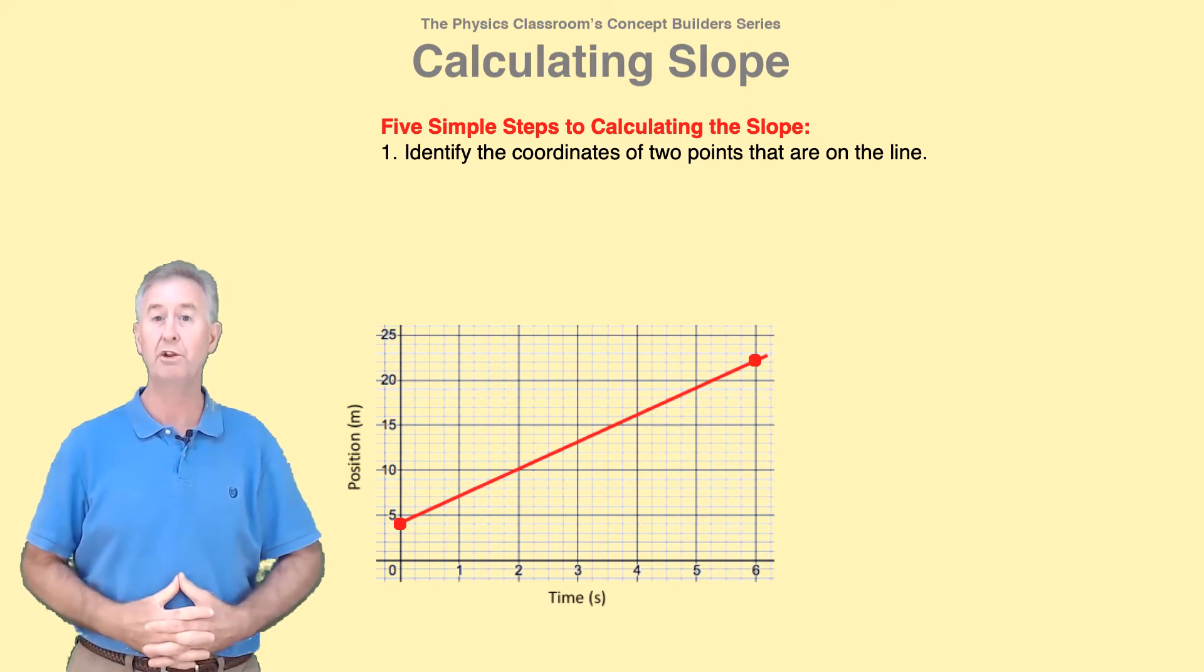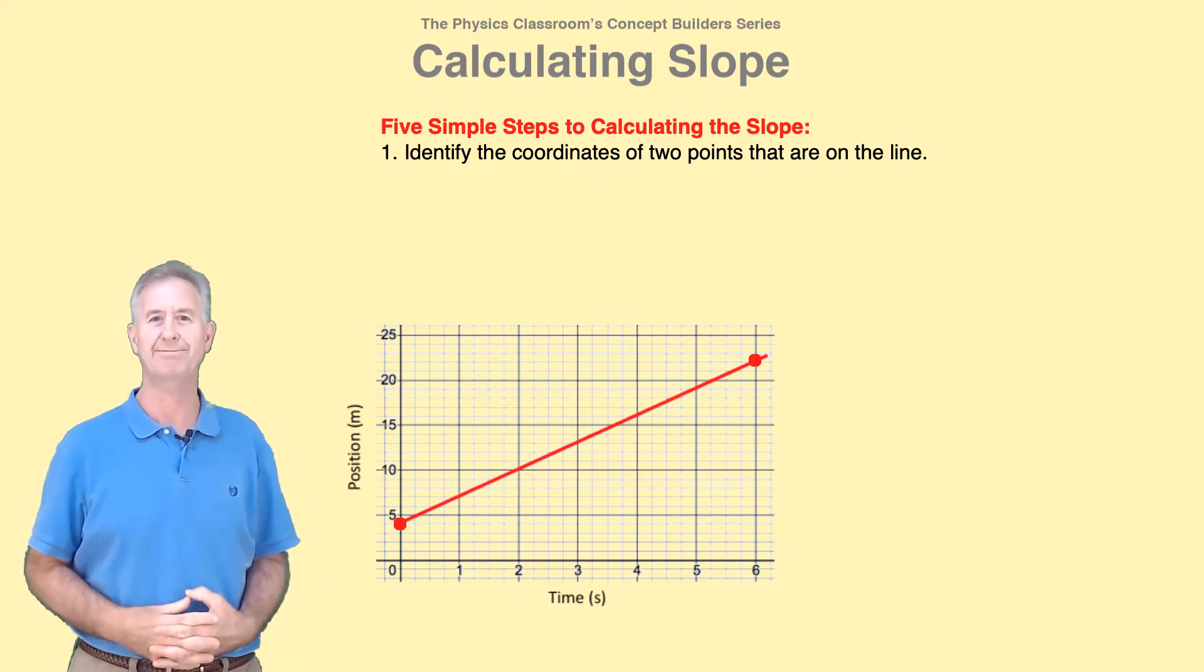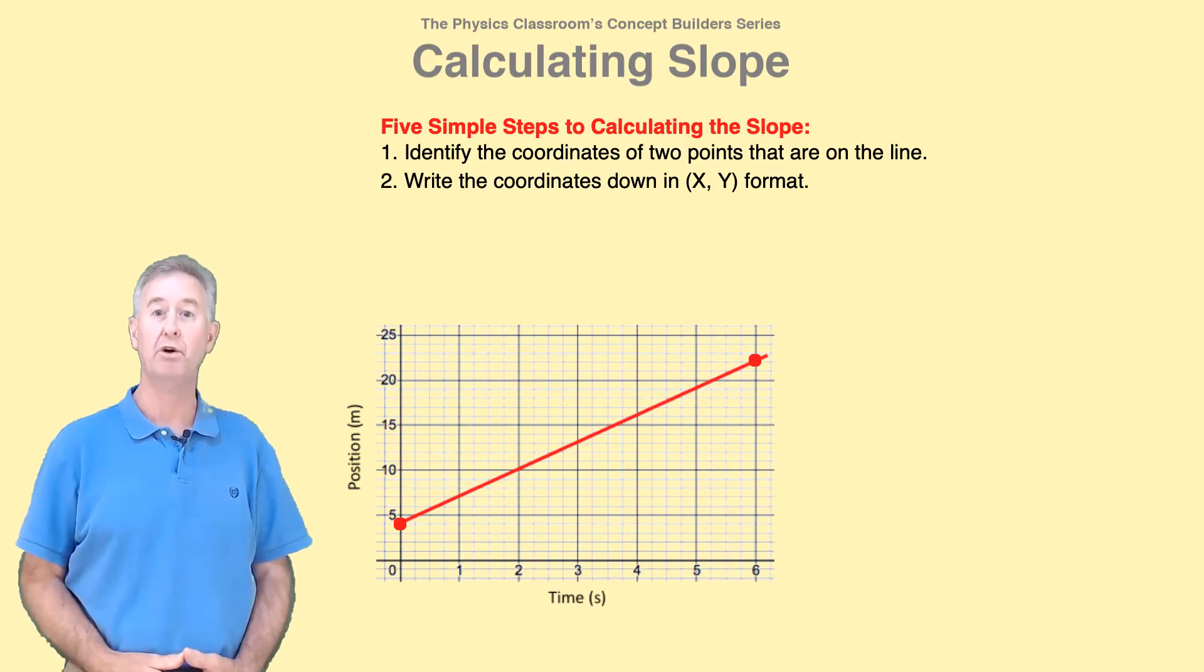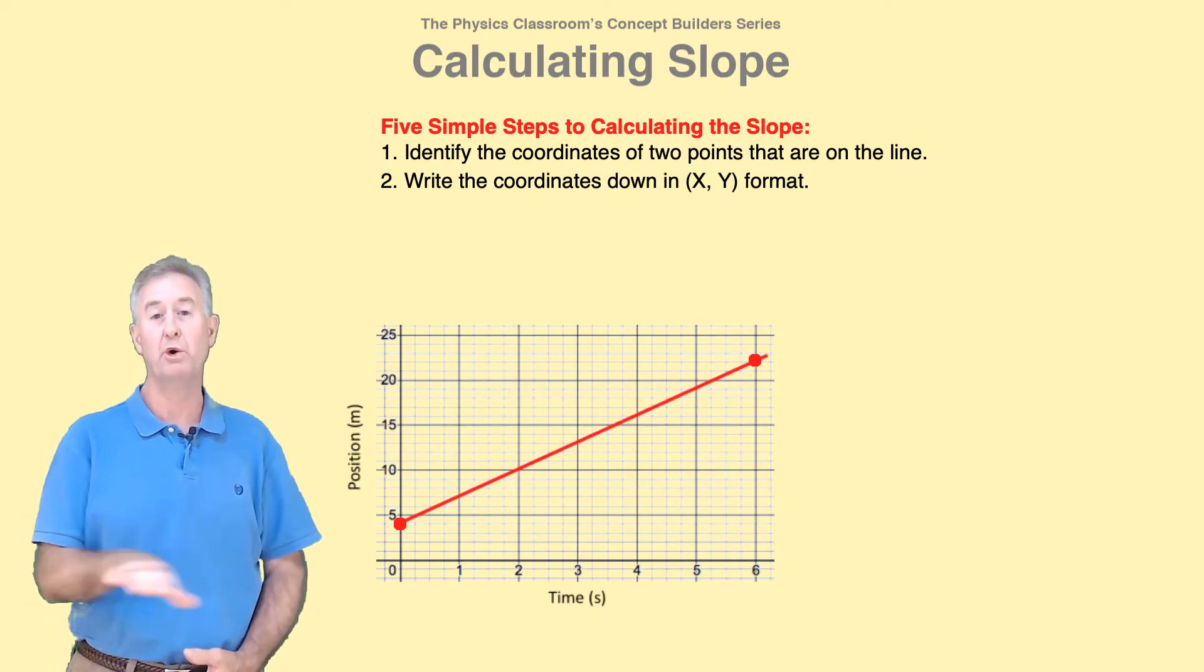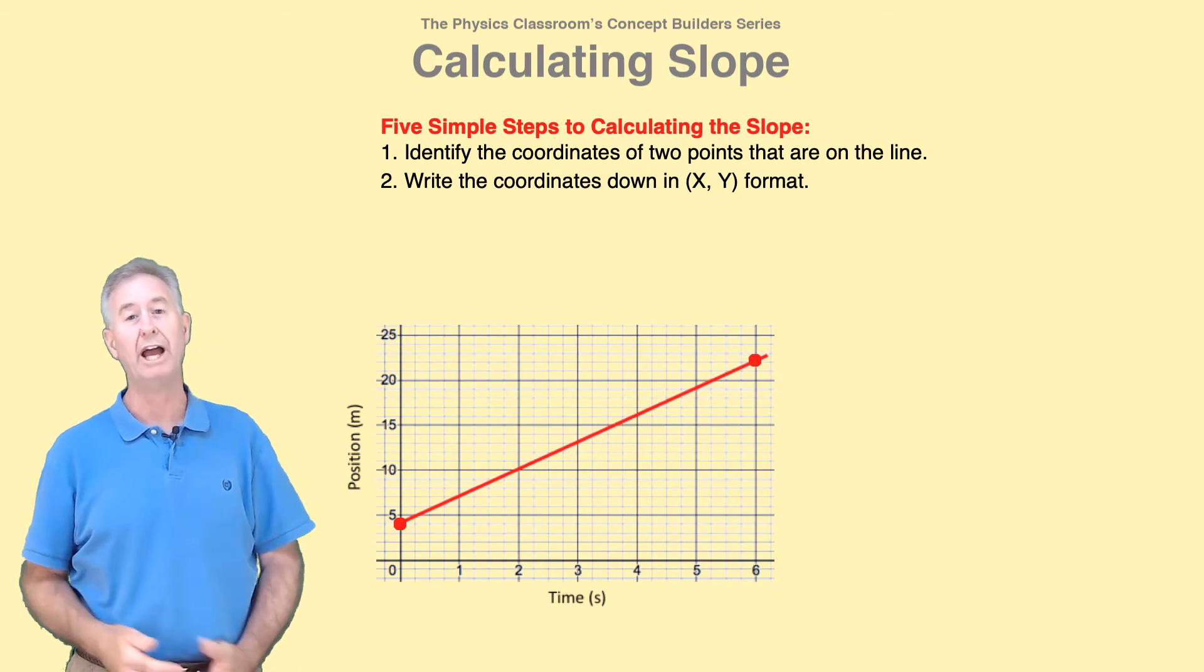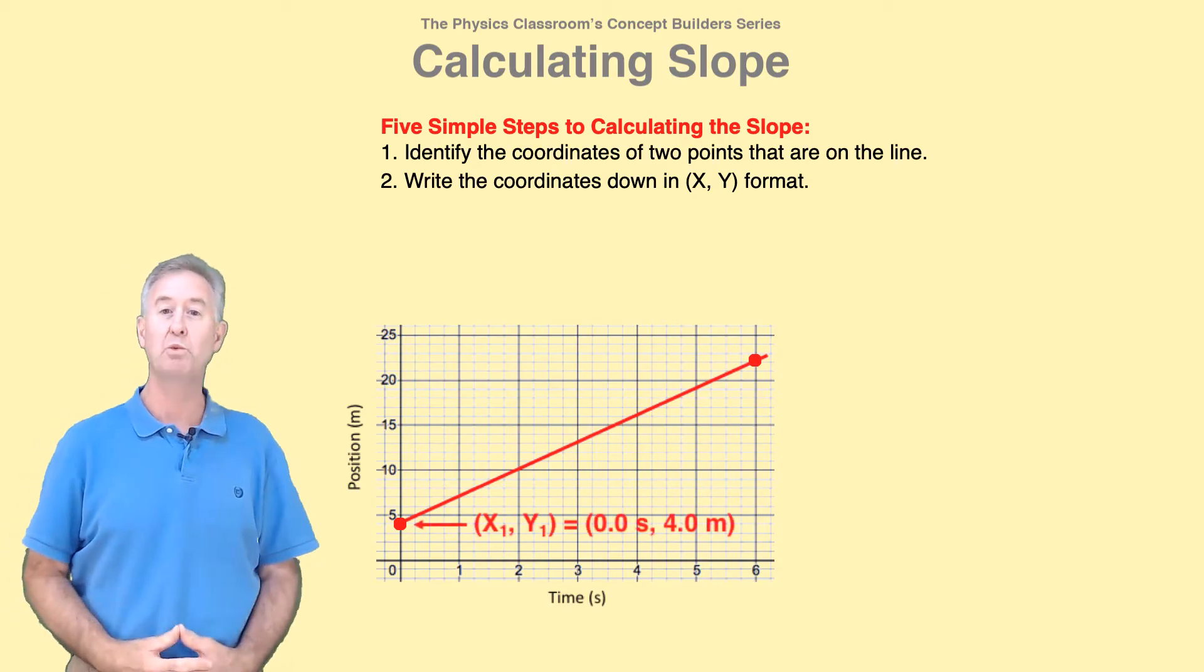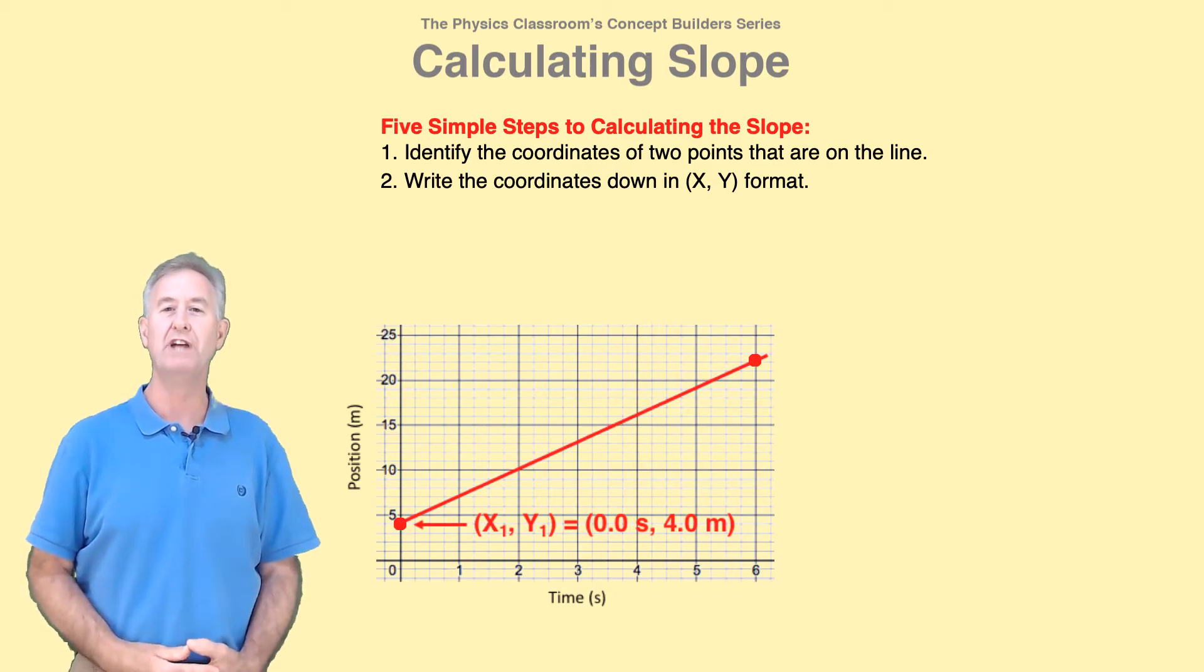I'm going to pick these two points. They're on the line, and I know their coordinates without estimating. Second, write the coordinates down in x, y format. x refers to the horizontal axis value. y refers to the vertical axis value. This point has x1, y1 coordinates of 0.0 seconds and 4.0 meters.